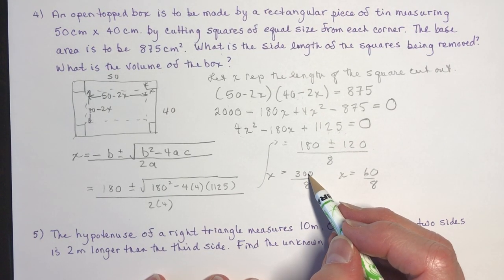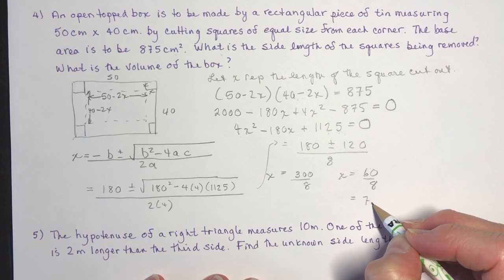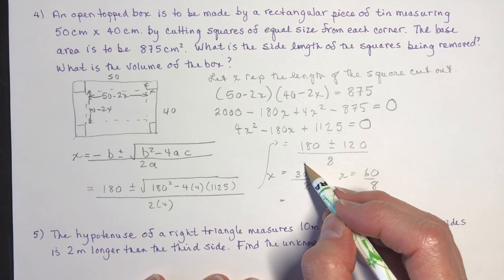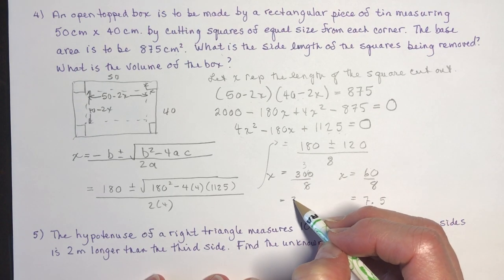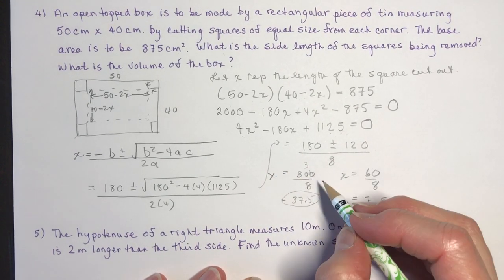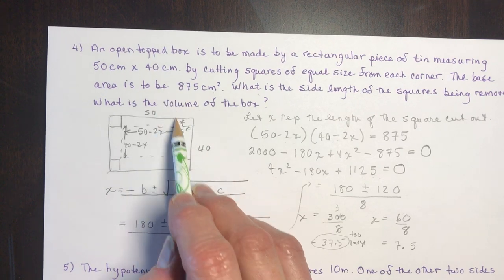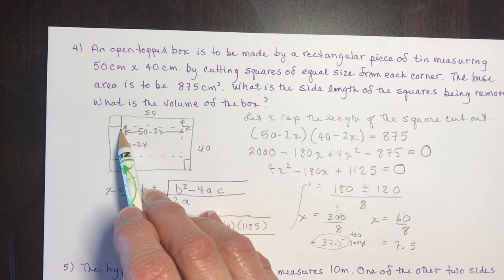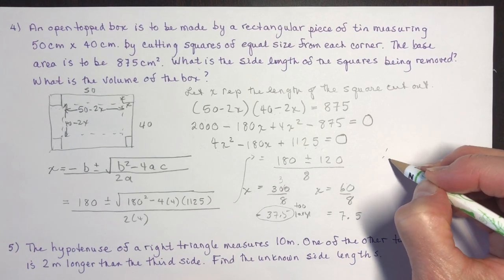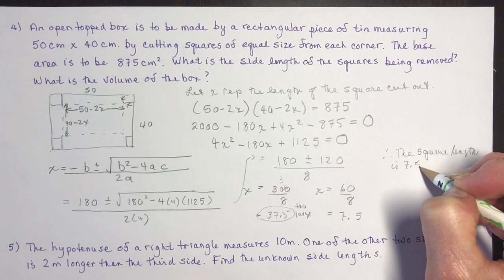The problem with 300 over 8 is that equals 37.5. I can't cut a square of 37.5 cm from each corner of a 40 cm wide sheet — that would total 75 cm, which is way too big. So that solution is rejected, and the only valid answer is 60 over 8, which is 7.5. Therefore the square side length is 7.5 centimeters.